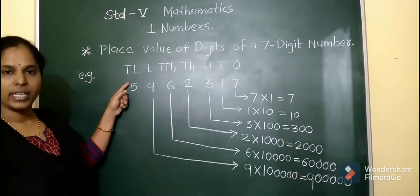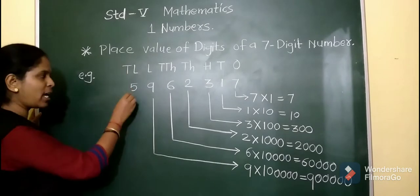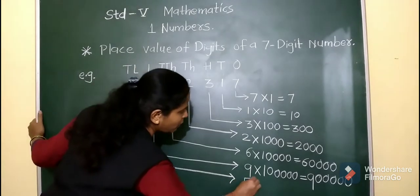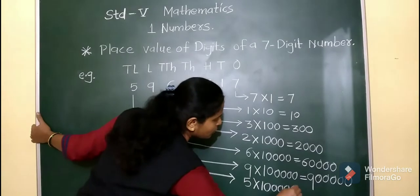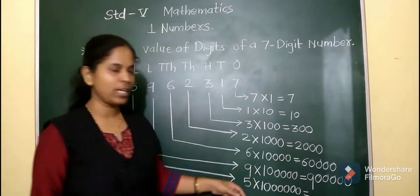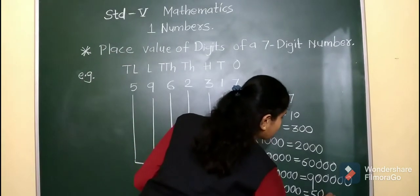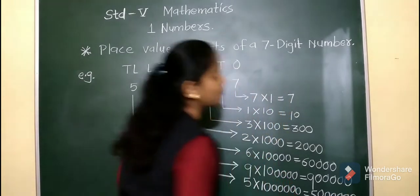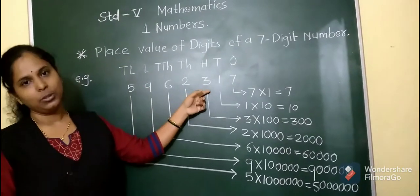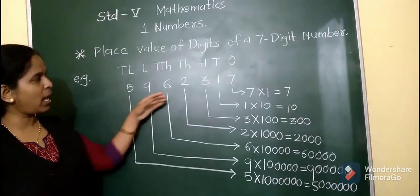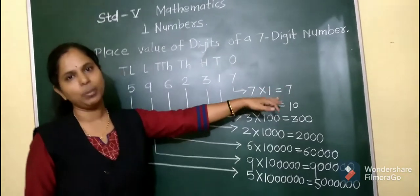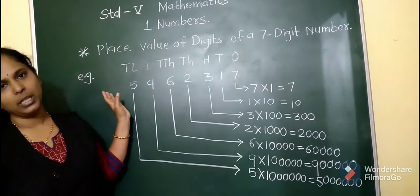Next digit is 5. 5 is at the 10 lakhs place, so we multiply 5 by 10 lakh. The place value of 5 is 50 lakh. So to find the place value of digits from a given number, we multiply the digit by its place, and whatever answer we get is the place value of that digit.